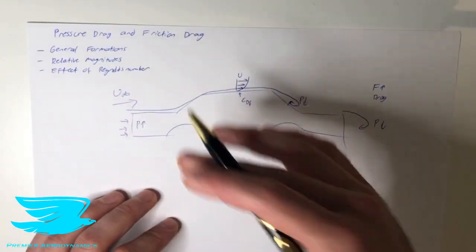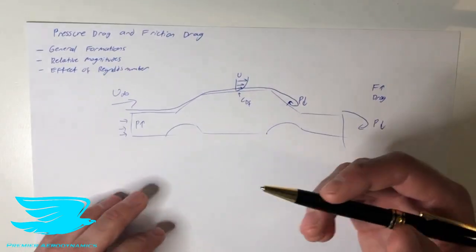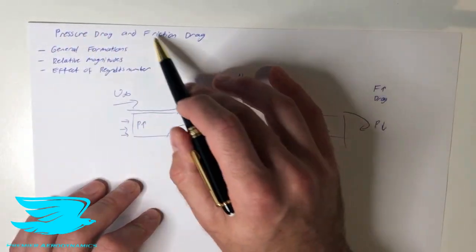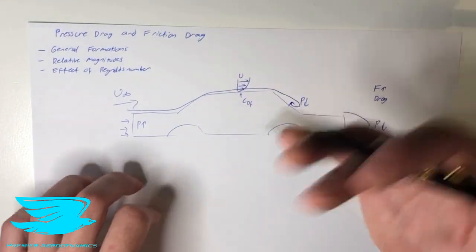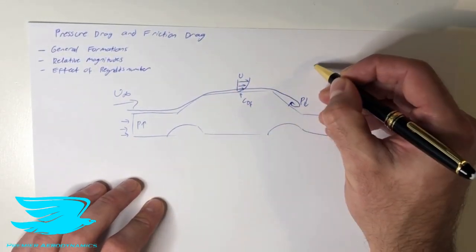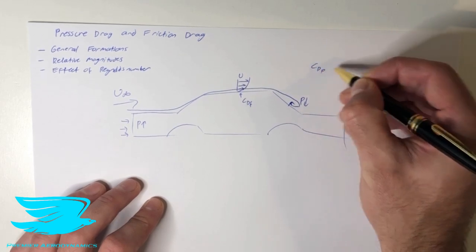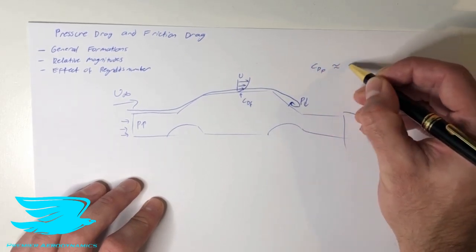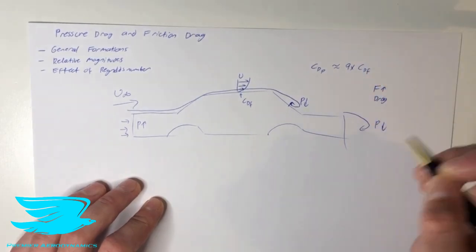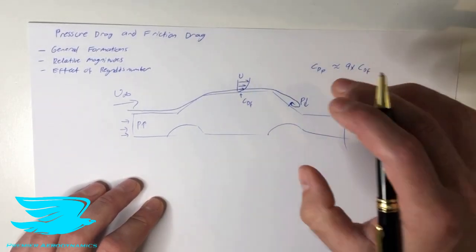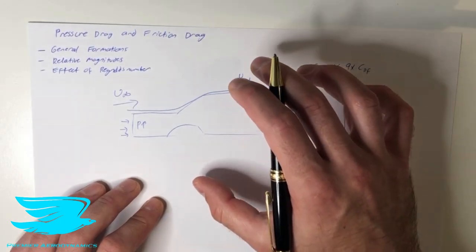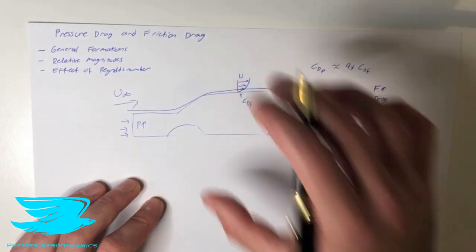For typical cars, what are the relative magnitudes between the two? The pressure drag coefficient is approximately nine times that of the friction drag coefficient. So the pressure drag coefficient is usually the most dominant drag component on a vehicle.